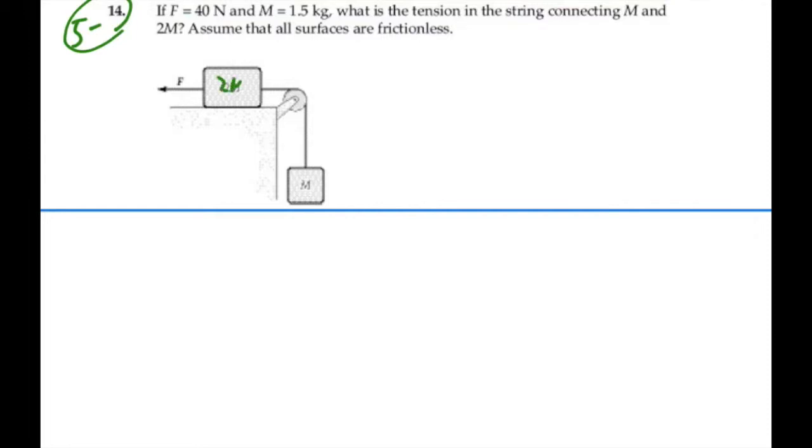Alright, so we've got a 2M here and an M here, and we've got a force out front equal to 40 Newtons. The first thing we'd like to do is blob all this together into one system, and let's just assume that it's all moving together with one forward acceleration in the direction shown.